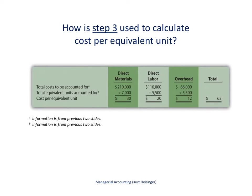Now we're going to calculate the cost per equivalent unit — that's the purpose of this slide. We have all the information we need from the previous two slides. We have total costs for direct materials of $210,000 and total equivalent units of 7,000. So $210,000 divided by 7,000 gives a cost per equivalent unit for direct materials of $30. We run the same calculation for direct labor and overhead to get the cost per equivalent unit for each. We'll need this information as we get into step four on the next slide.